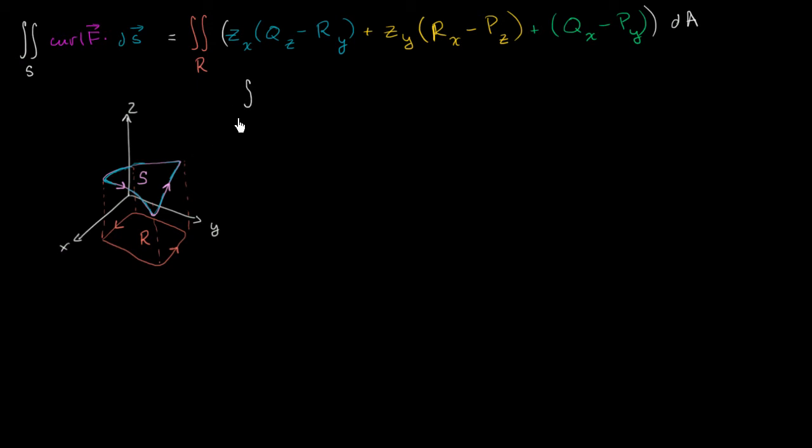We're going to try to figure out what is the line integral over the boundary C, where this is C right over here, the boundary of our surface, of F dot dr. And what we're going to see is that we're going to get the exact same result as we have right up here.